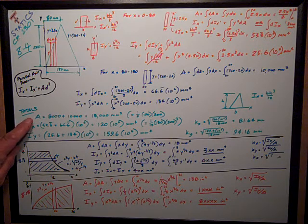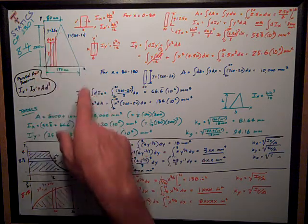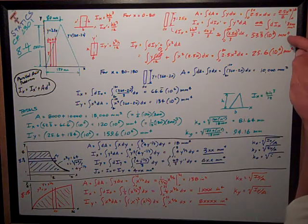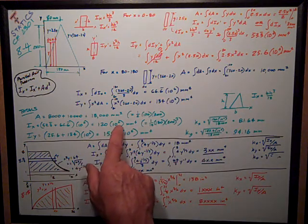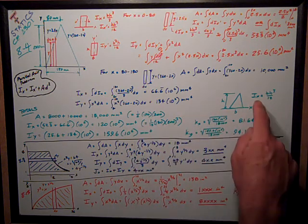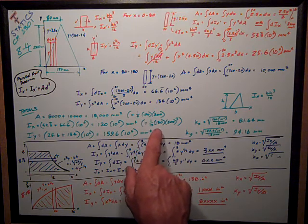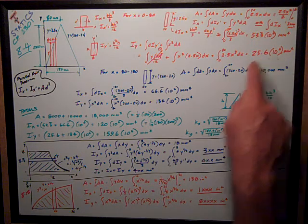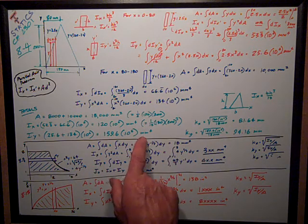Now I just need to sum things. The total area is 8,000 + 10,000 = 18,000 mm², which checks out using area = ½ × base × height. Ix is the sum of the two terms: 53.3 × 10⁶ + 66.6 × 10⁶ = 120 × 10⁶ mm⁴. There is a formula for the moment of inertia of a triangle about its base: bh³/12. Checking: (1/12)(180)(200³) = 120 × 10⁶ mm⁴ — that checks out. Iy is 25.6 + 134 = 159.6 × 10⁶ mm⁴.